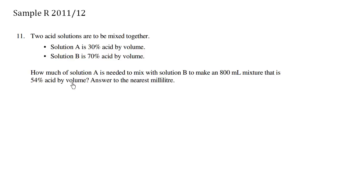Two acid solutions are to be mixed together. Solution A is 30% acid by volume. Solution B is 70% acid by volume. How much of solution A is needed to mix with solution B to make an 800 milliliter mixture that is 54% acid by volume? Answer to the nearest milliliter.